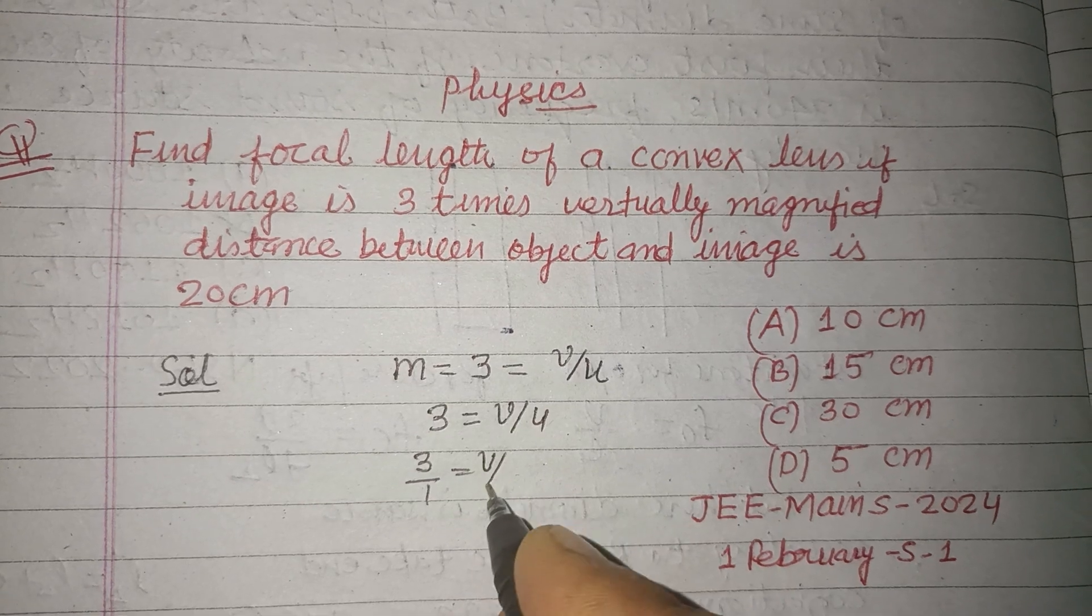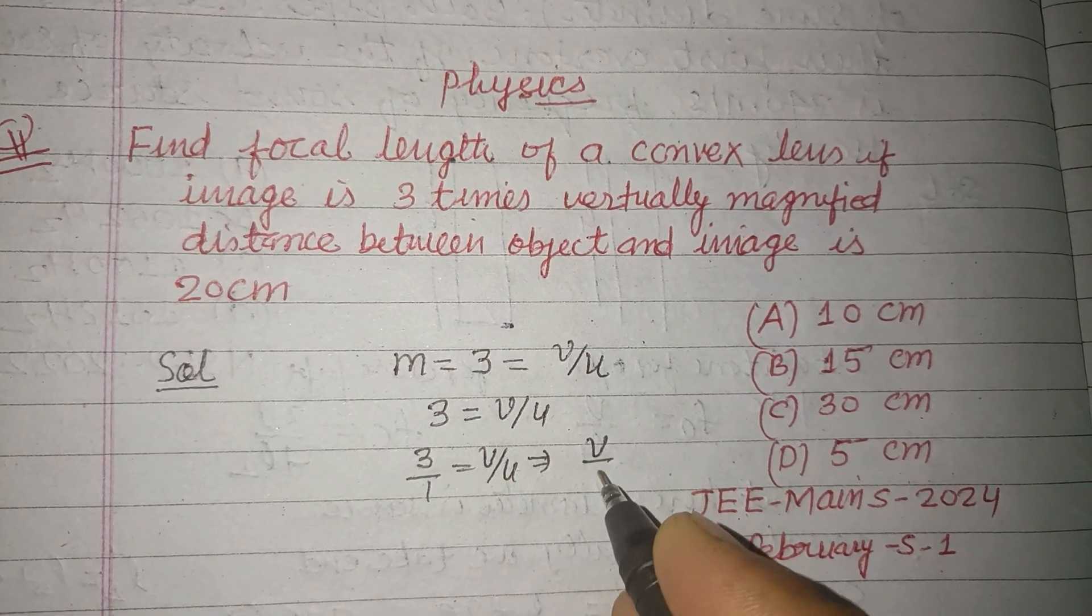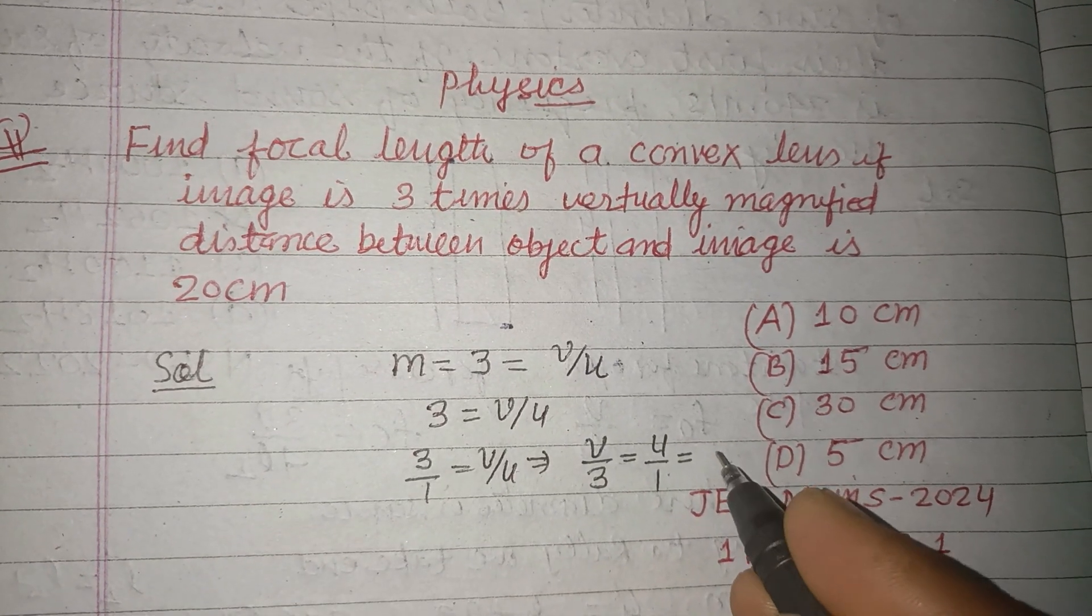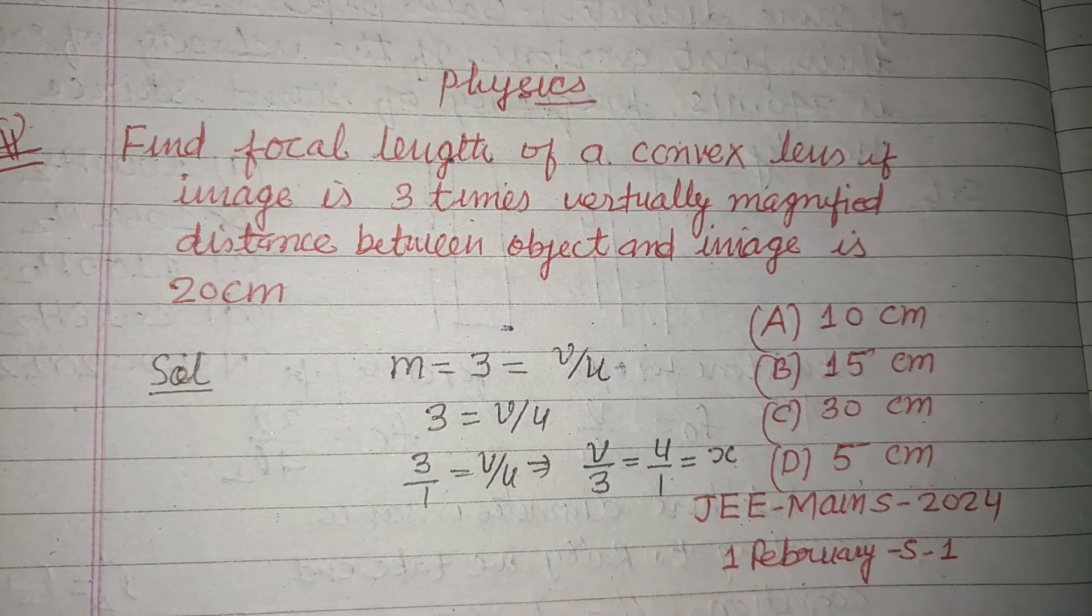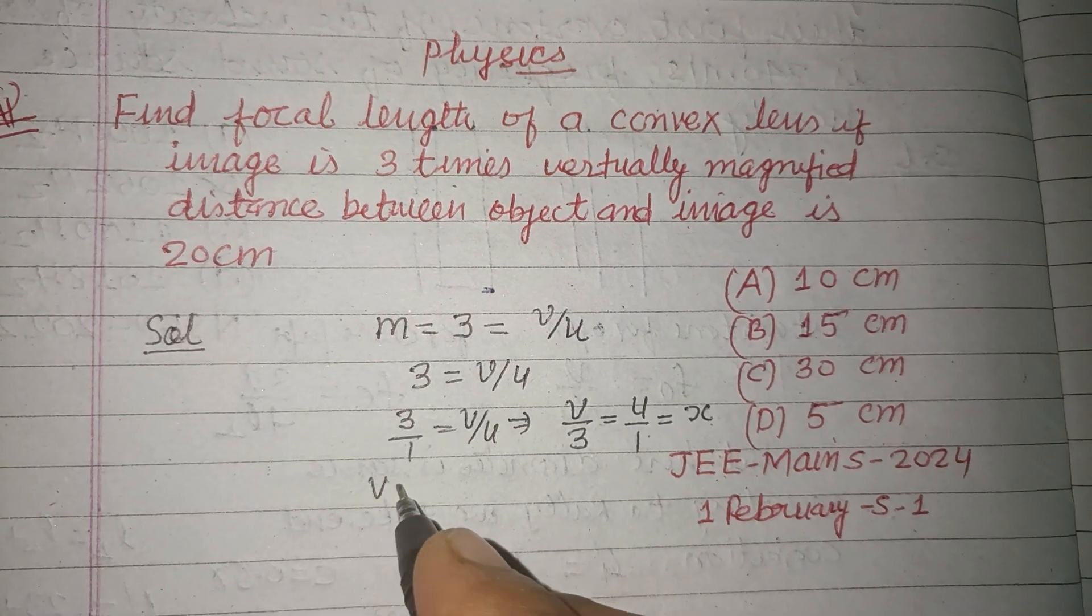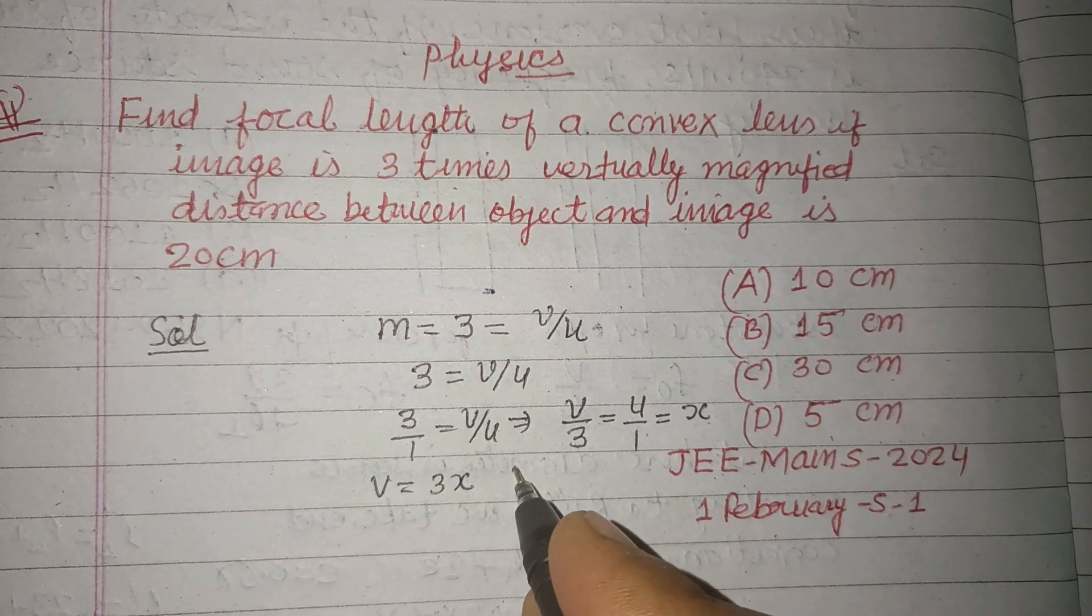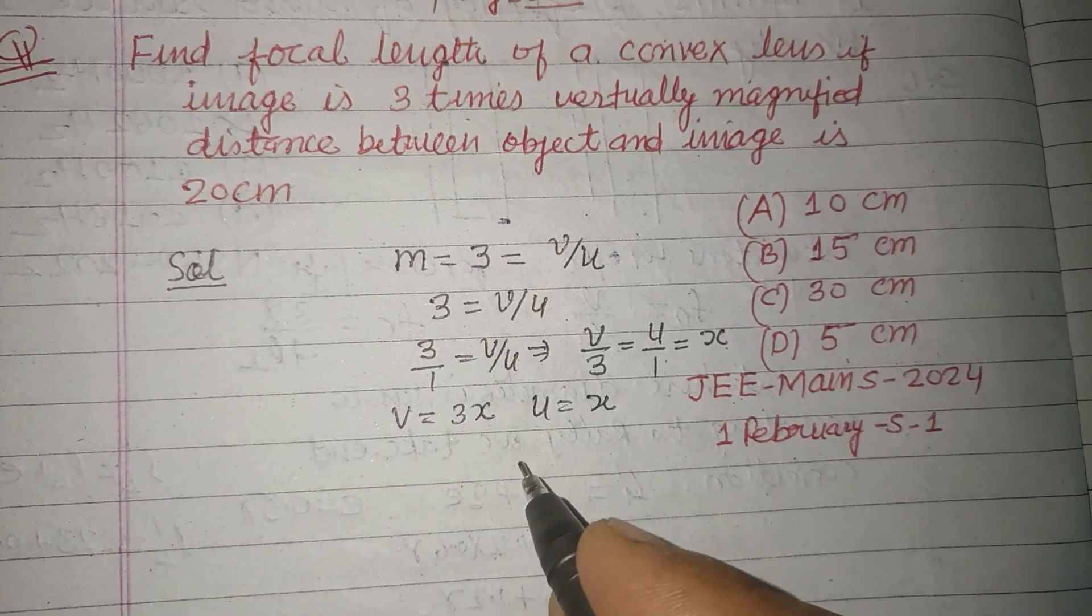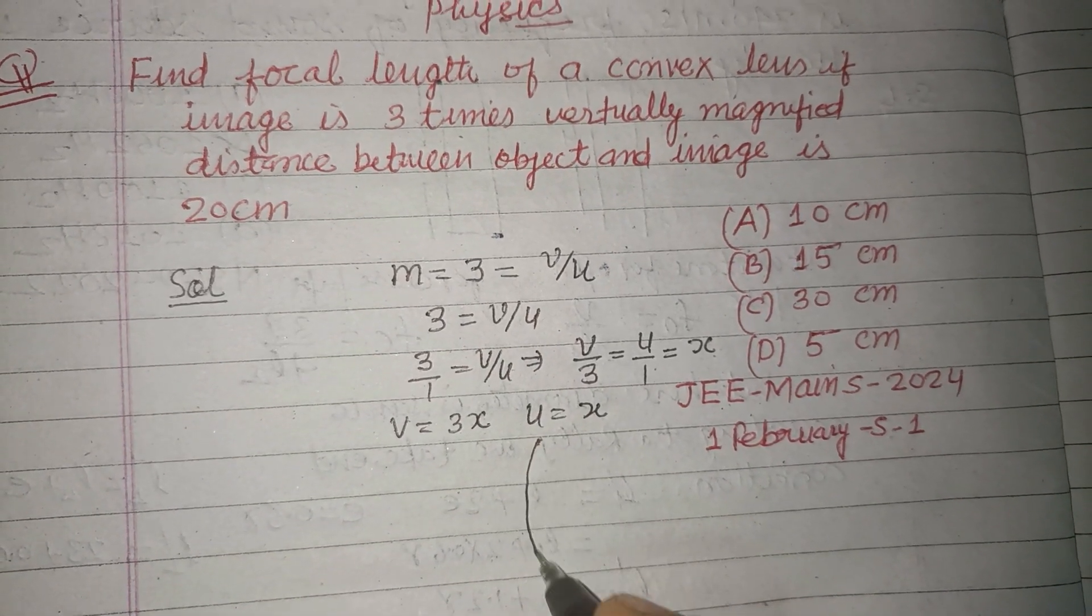equals v upon u. So we take v upon 3 equals u upon 1, or let it equal x. So from here, v equals 3x and u equals x.